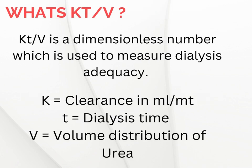Now KT over V — which is a fancy-looking term, but actually quite logical. It's a unitless, dimensionless number that tells us how efficiently dialysis is removing urea. Think of K as the clearance power of the dialyzer, T as the time — how long the dialysis session lasts — and V as the volume of distribution of urea, which equals total body water. More clearance, more time, and the right volume? You've got a solid dialysis session.